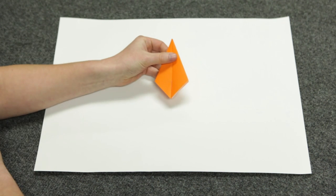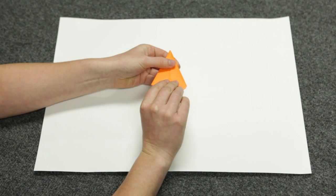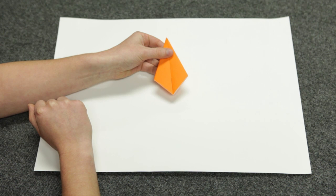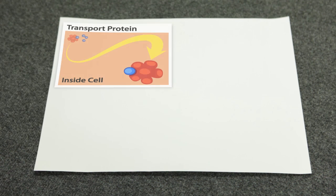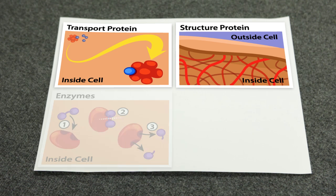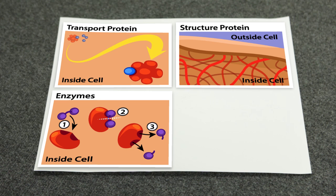Proteins are made of building blocks called amino acids and have their own special shape. Not only do they look different but they have different jobs to do inside the cell. Some proteins help move things around in the body. Others act like support structures or glue to hold parts of the cell together and some can help make reactions in the cell go faster.